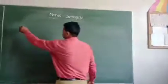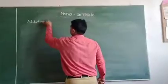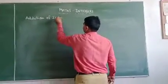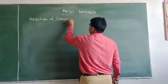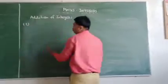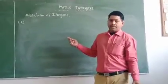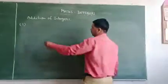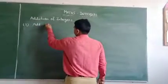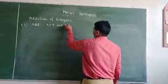Addition of integers. Case number one: when both integers are on the same side, either positive or negative. First example in class: add 67 and 37.